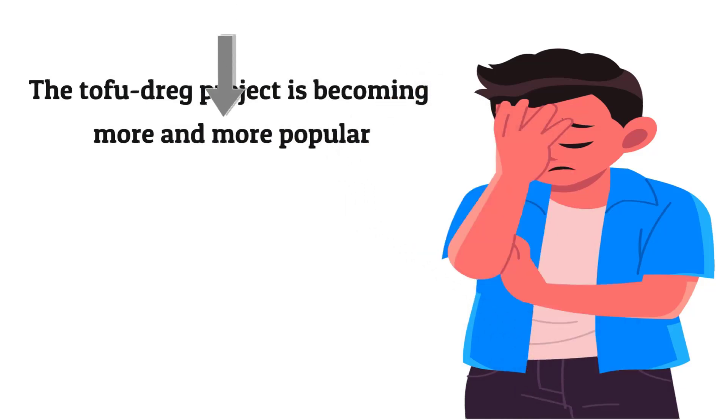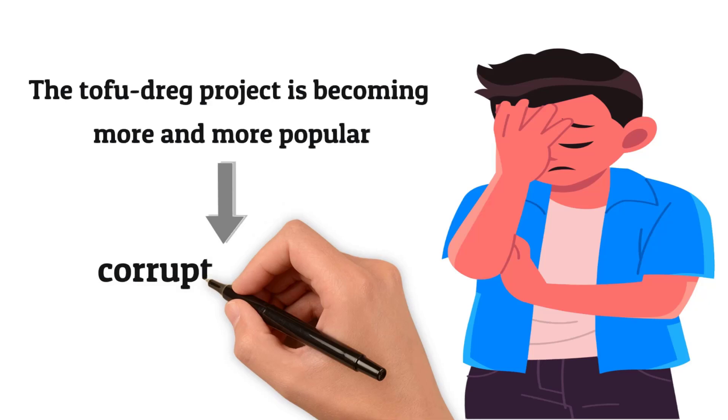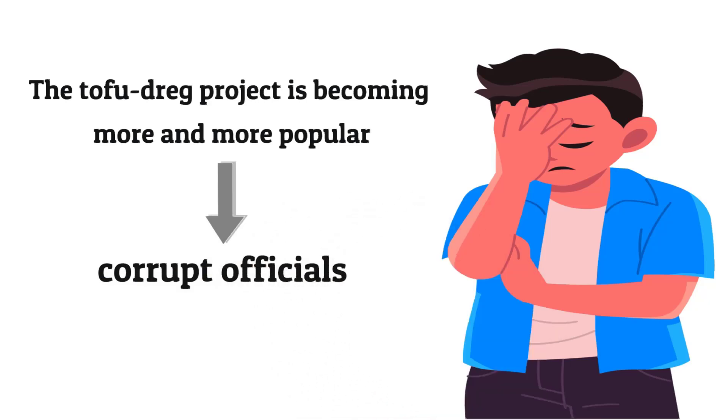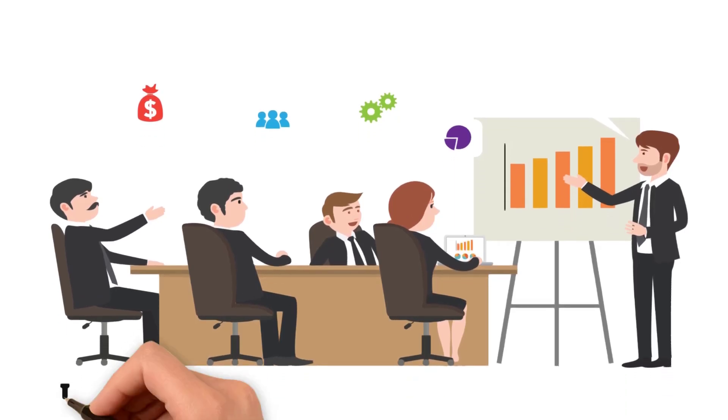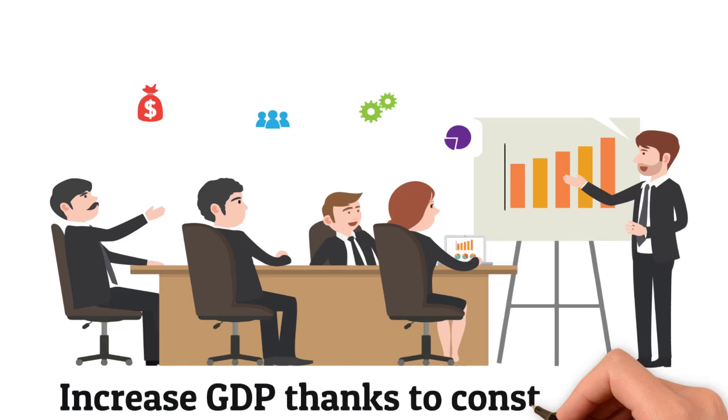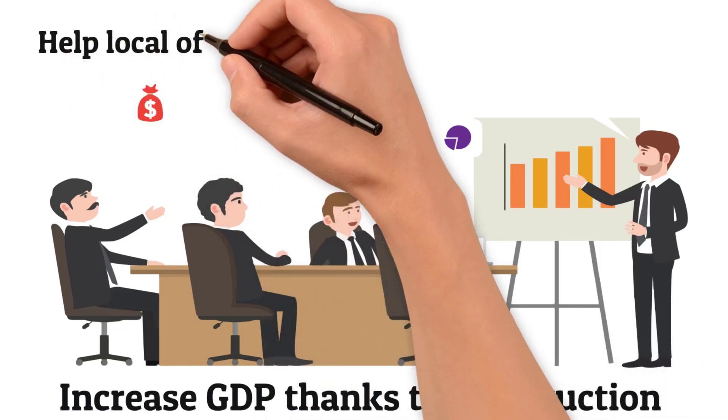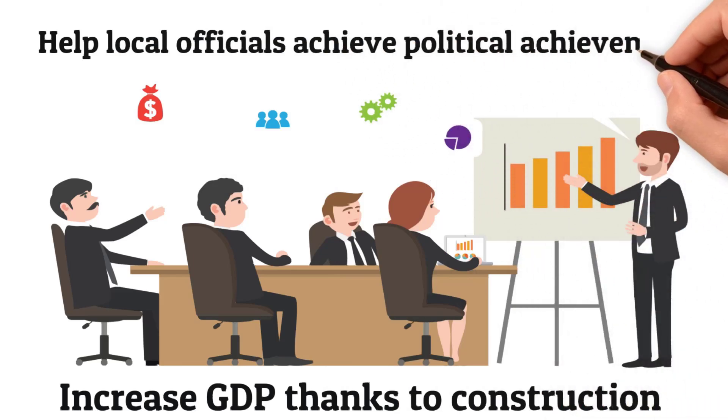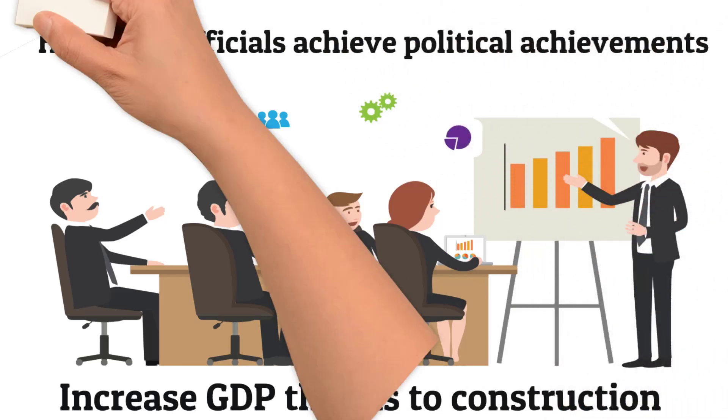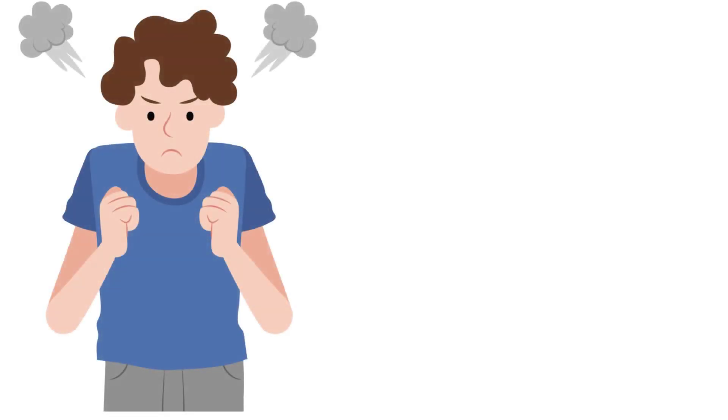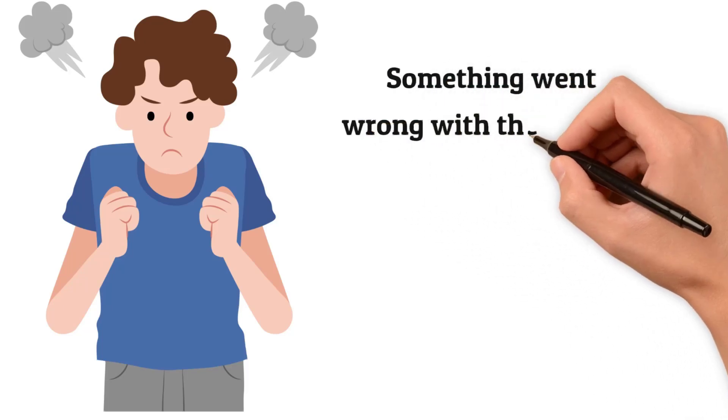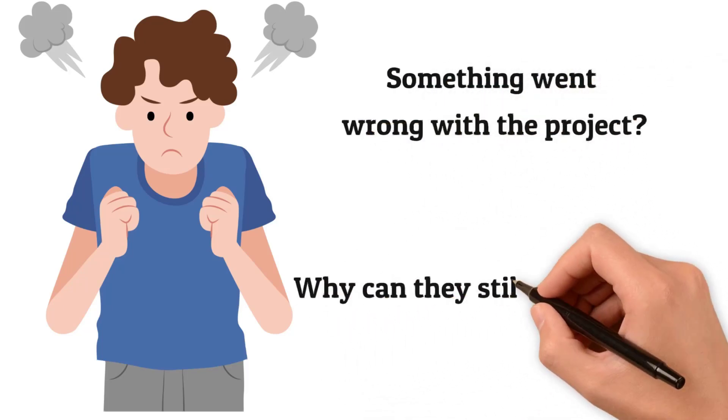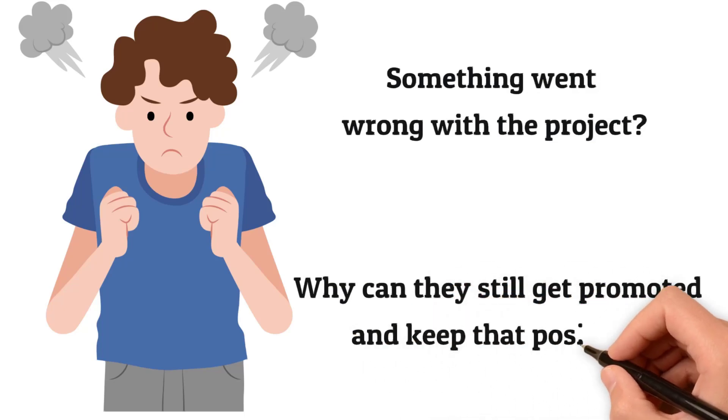Accountability challenges in public construction mainly stem from administrative corruption among local CCP officials. For them, their performance is largely reflected in economic data, so they try to boost local GDP through as much construction as possible. Projects with large investments and short construction periods become convenient means for local officials to achieve political achievements. Even if accidents occur after those projects are completed, the officials who approved the projects may have been promoted to higher positions or still hold positions in local government, making it a challenge to hold them accountable.